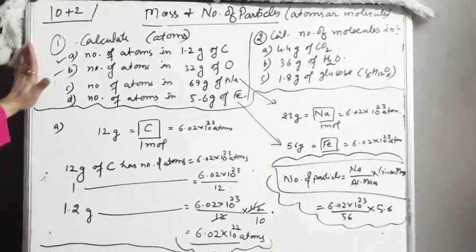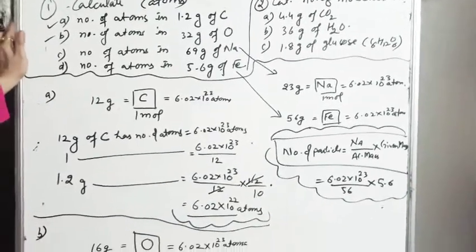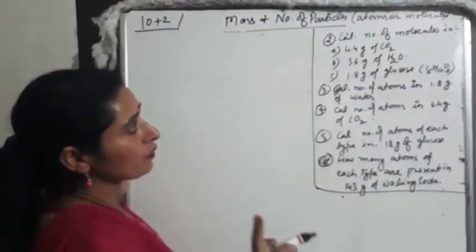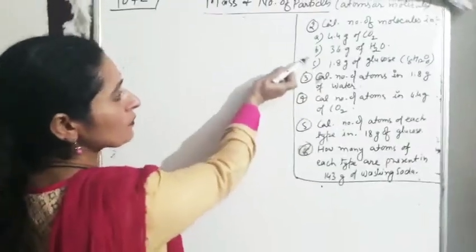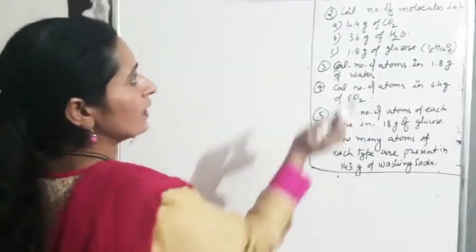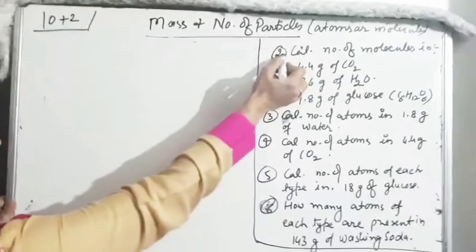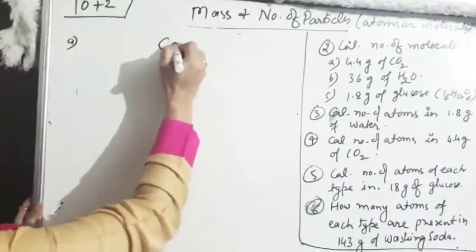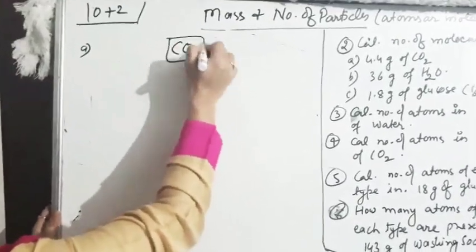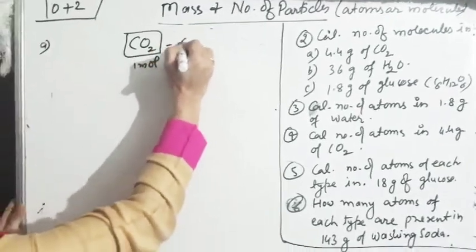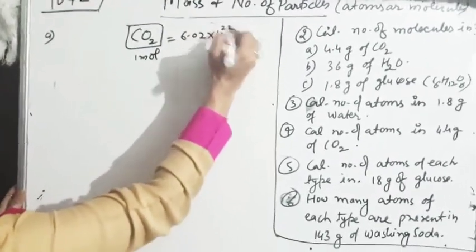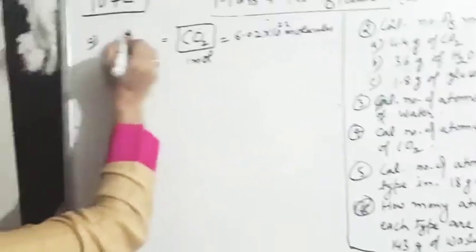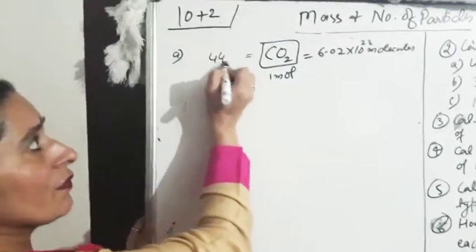तो यह था calculation of number of atoms from the given mass. अब हम बात करेंगे number of molecules की. हमने number of atoms की बात की, अब हम simply number of molecules निकालेंगे. हमारे पास है second question का A part — carbon dioxide. As usual, center में हम लिखेंगे CO2. This is one mole.